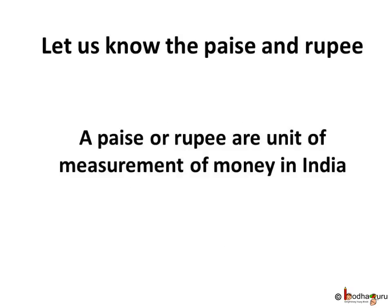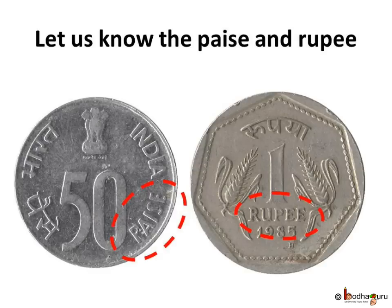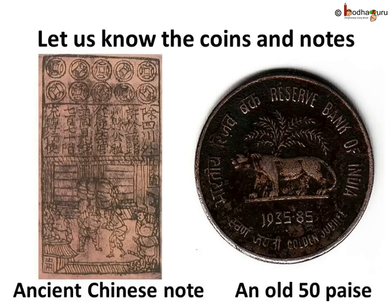So what is paise or rupee? They are the unit of measurement of money in India. In other countries also, there are similar other units of measurement of money. Like the United States of America has cents and dollars. If you look closely, you would find paise or rupees written on the coin or note you find in India, which helps you to know the right value of the coin or the note. Like the 50 paise coin you can see on the left side, or the 1 rupee coin you can see on the right side. Not only numbers and writing, you would find many beautiful pictures, symbols and Ashok's pillar on the coin or the note.